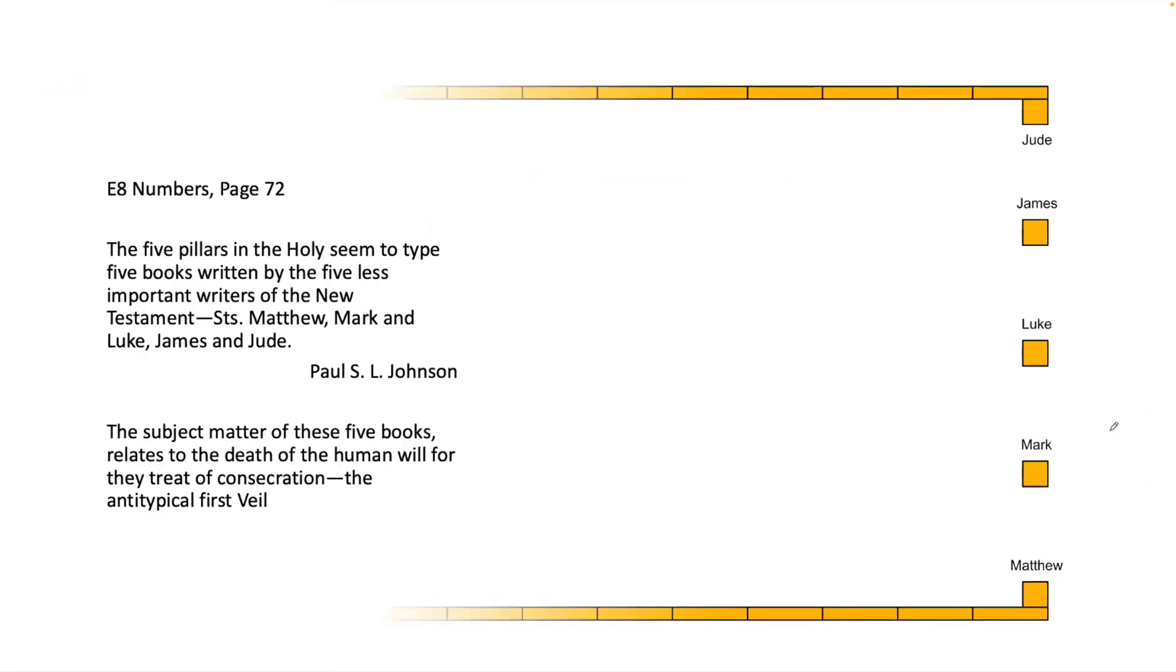The five pillars in the Holy seem to type the five books written by the five less important writers of the New Testament: Saints Matthew, Mark, Luke, James, and Jude. The subject matter of these five books relates to the death of the human will, for they treat of consecration—the antitypical first veil.